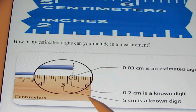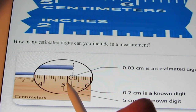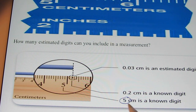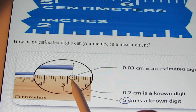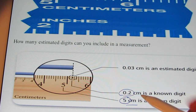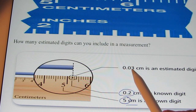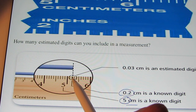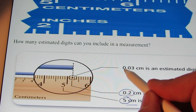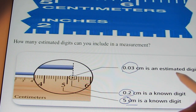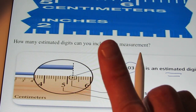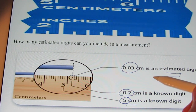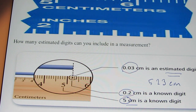This illustration shows a rod with a length between 5 and 6. So we know 5 centimeters is a known digit. It's between 5.2 and 5.3, so we know the .2 is also a known digit — that gives us two significant digits so far. The third digit, the individual estimated it's really close to 5.2 and said 5.23. That's the estimated digit. When we make measurements, we're allowed one estimated digit. So this measurement is 5.23 centimeters and has three significant figures.